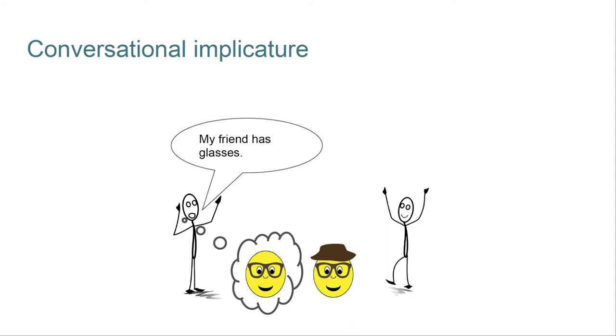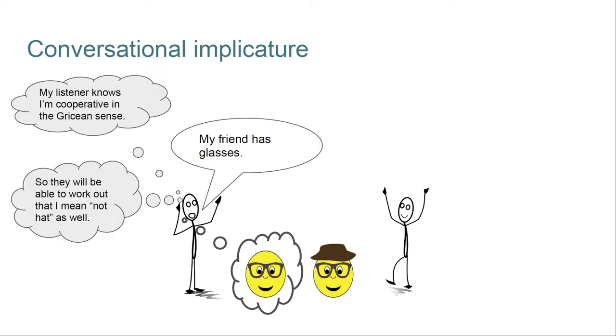In the background, the definition of implicature says that the speaker will reason roughly like this: my listener knows I'm cooperative in the Gricean sense, so they'll be able to work out that I mean not hat as well.